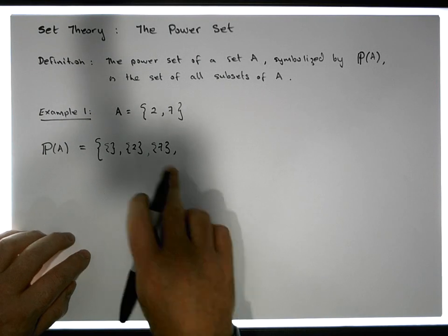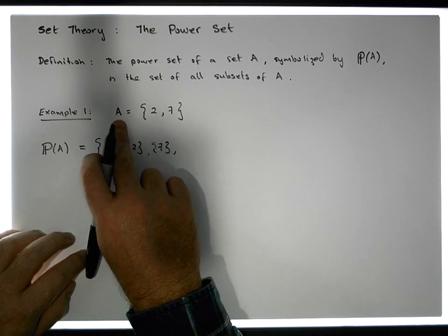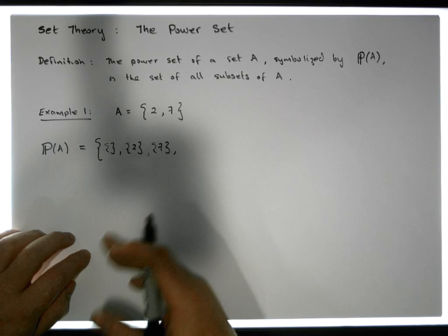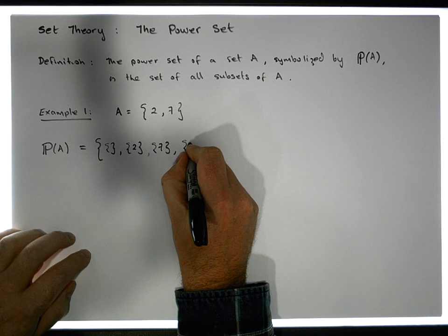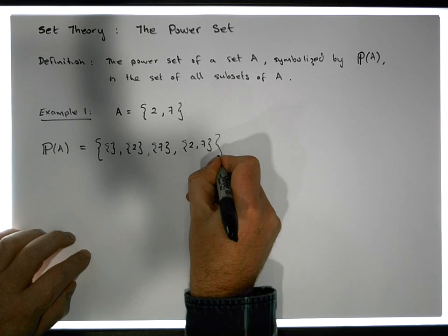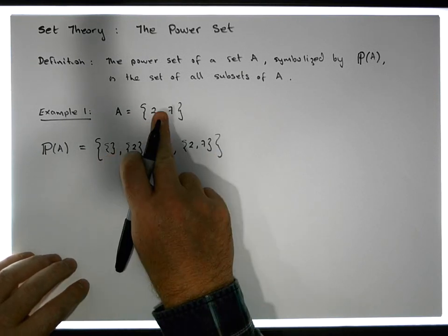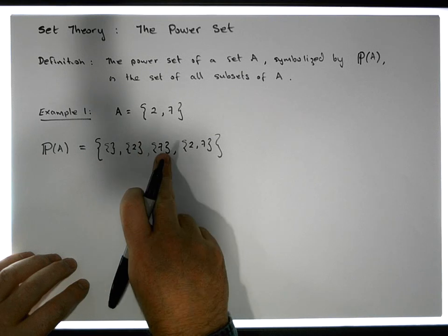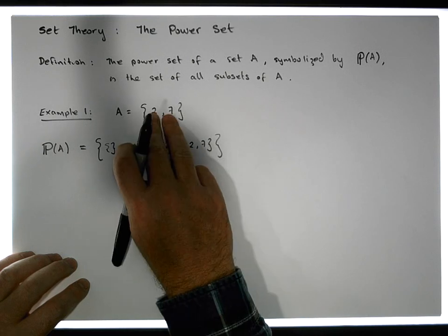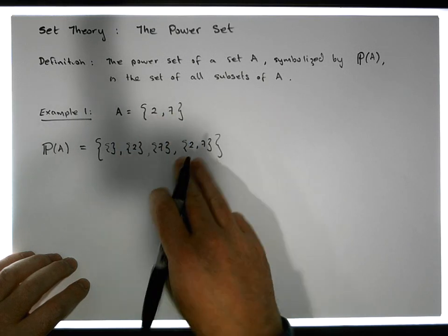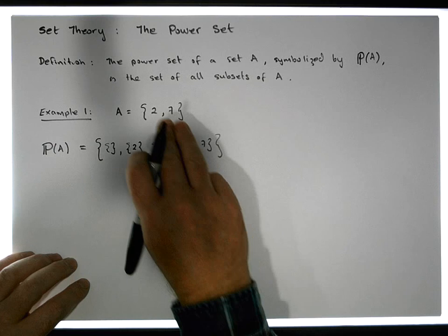The next possible sets are those of size two. The only set of size two that can be a subset of A is A itself, since all sets are subsets of themselves. So we also include the set containing two and seven. That's how we construct the power set: we start with the empty set, then include all singletons, then all pairs. We stop there because any set with three elements cannot be a subset of this set, as it would contain more elements than A.